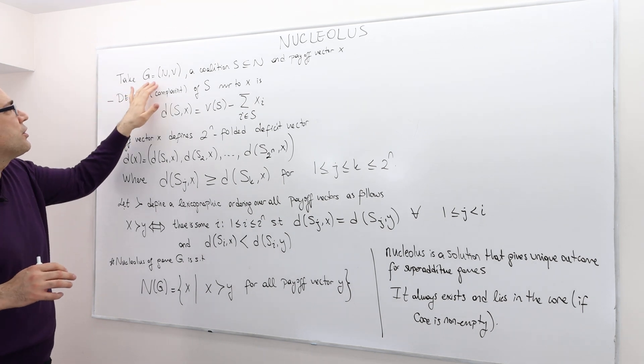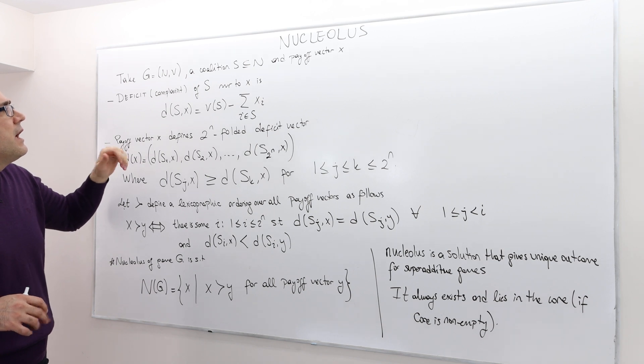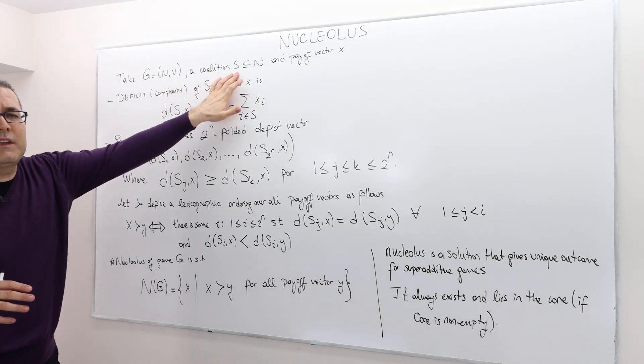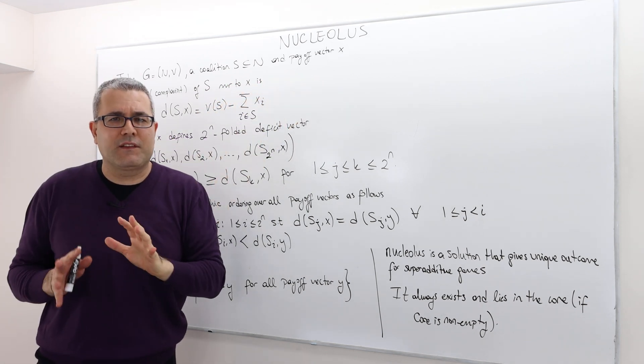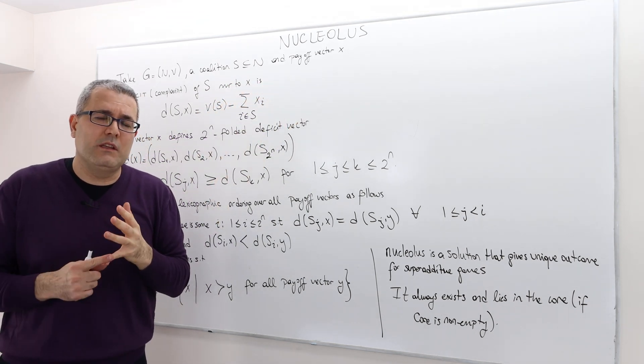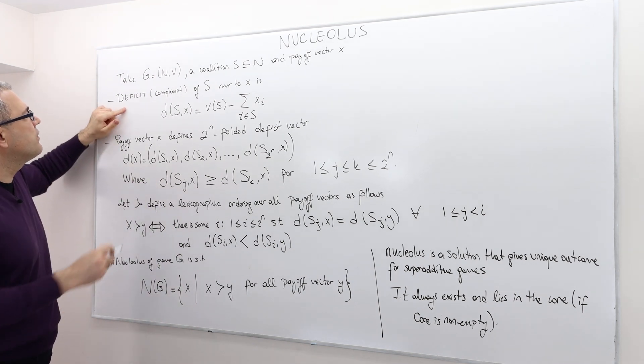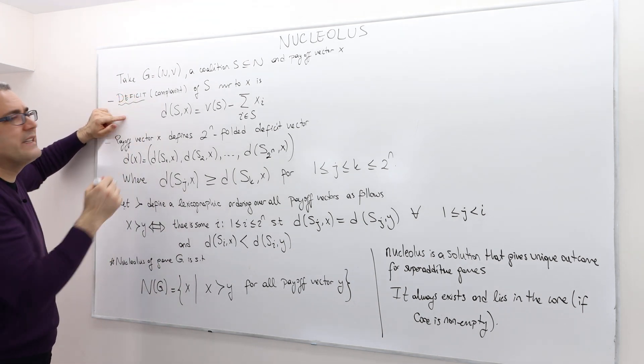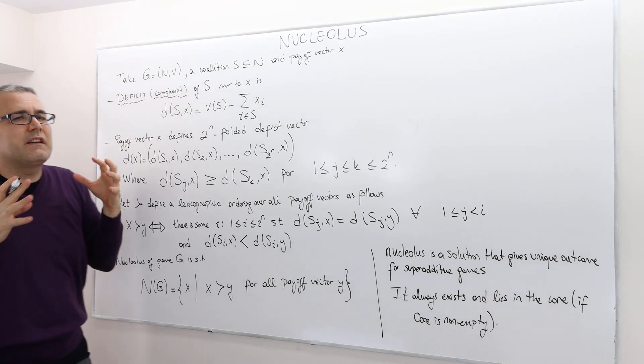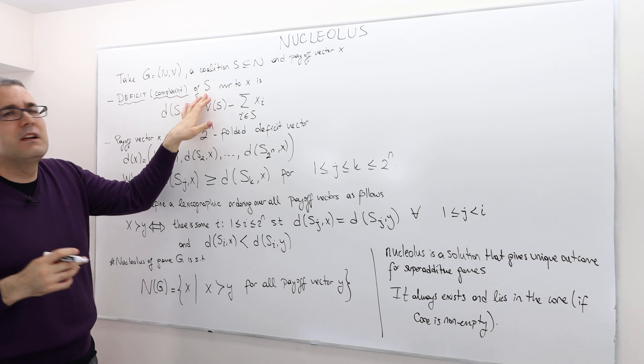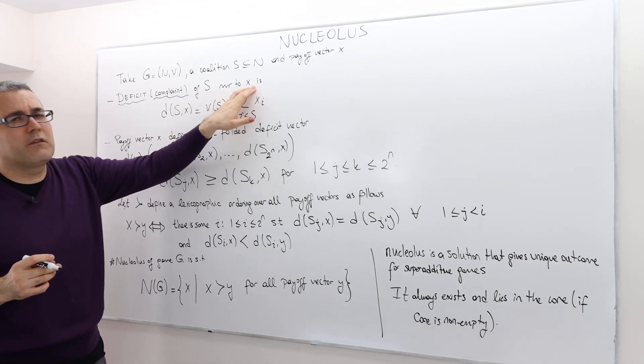Take any coalitional game G with set of players and the worth function V, and take any coalition S, which is a subset of N, and a payoff vector X. Remember the payoff vector has to be individually rational and has to be feasible. So we're going to define the notion of deficit or complain.